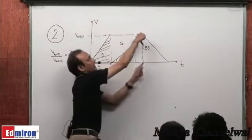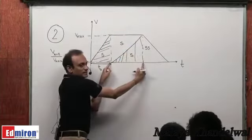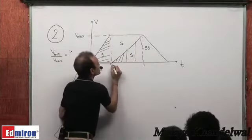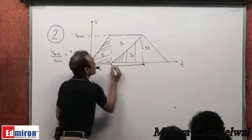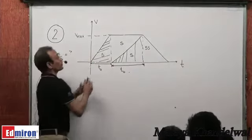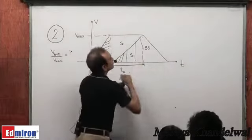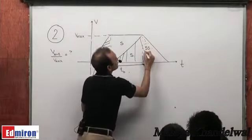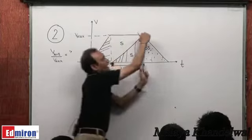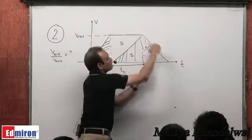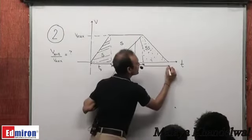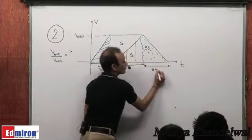Since both triangles have the same height and the same area S, they must have the same base — so this base must be T0 units. Now, looking at the deceleration triangle versus the first triangle: they have the same height, but the deceleration triangle has 5 times the area, so its base must be 5T0.